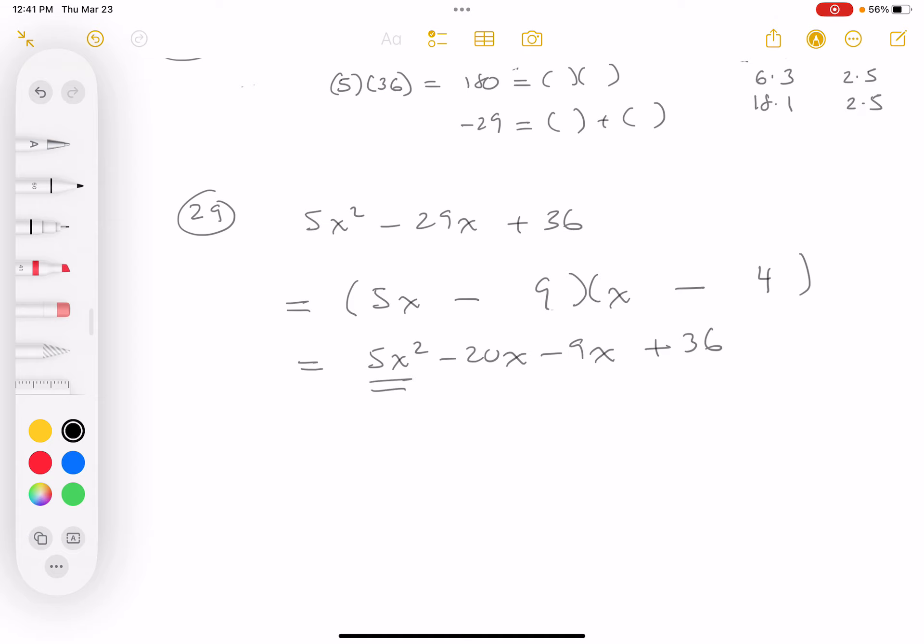Does that work? I do get the 5x squared, I do get the 36, and if you combine those, you get minus 29x, so it does work. Thank you.